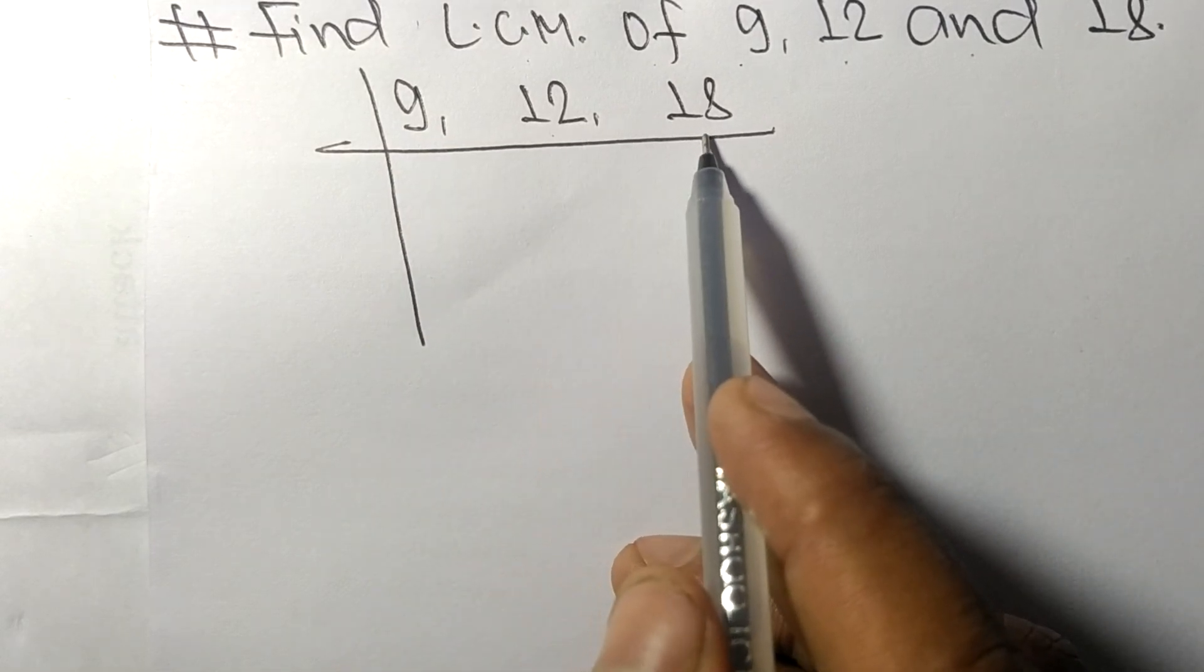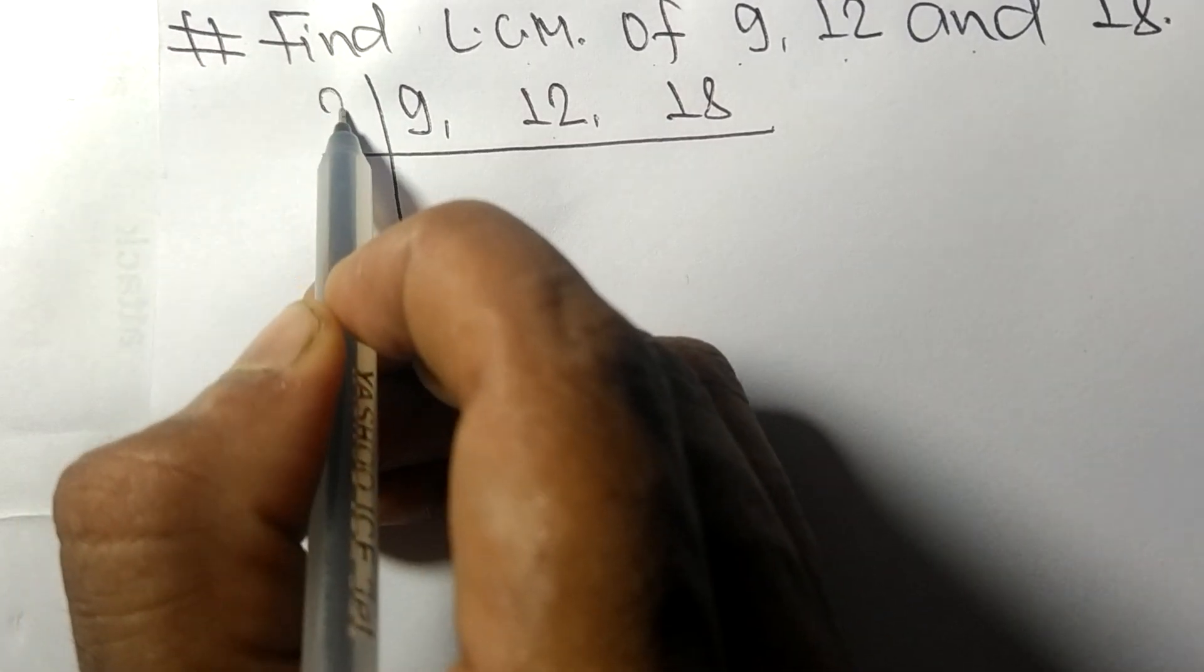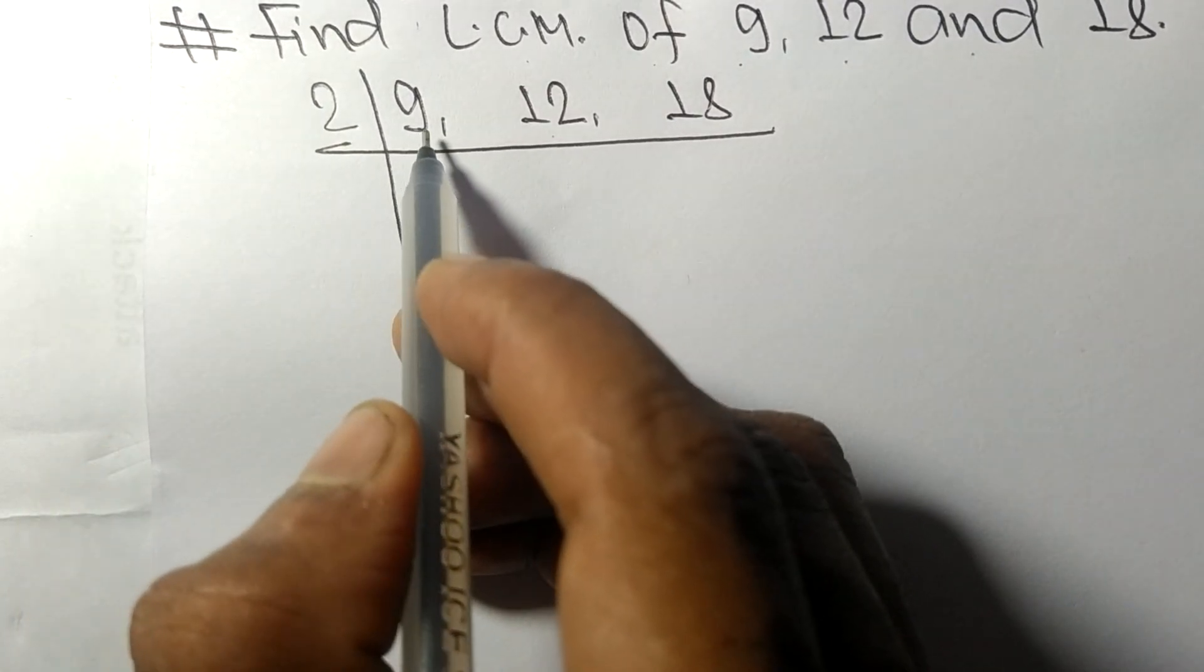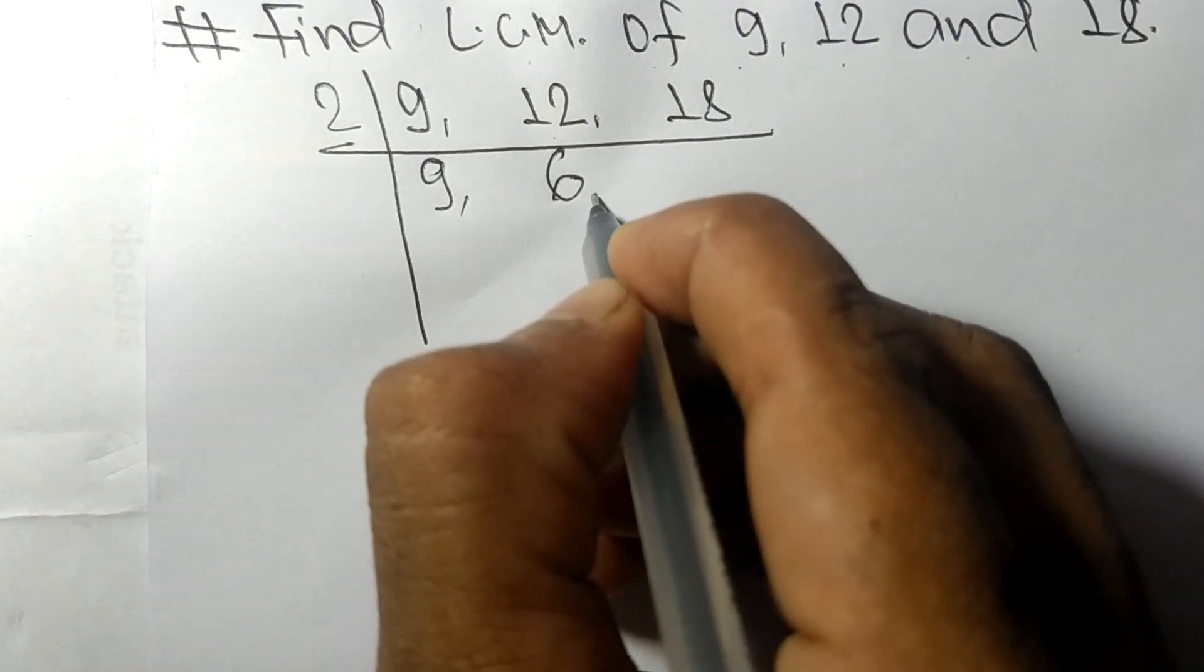12 and 18 are exactly divided by lowest number 2. 9 not divisible so it is same. 2 times 6 mean 12, 2 times 9 mean 18.